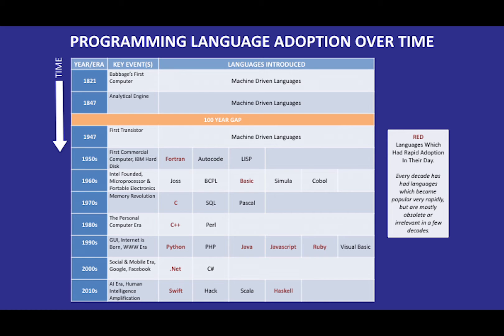What you see here are the programming language adoption rates — actually, how programming languages evolved over time. We started with machine-driven languages. You might recognize a lot of these early languages: Fortran, Basic, Pascal, C++. And then the evolution of these languages continues. The important point is: languages come and go. New languages will come and go.